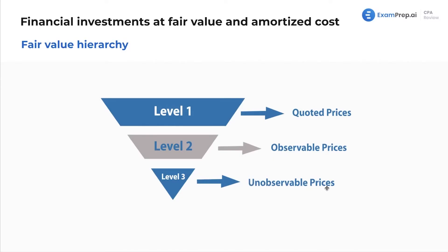Lastly, level three: unobservable prices. This would be something really specific that you just don't have anything you could observe. Maybe we discover a new type of renewable energy — awesome — but you can't compare it to anything else because it's completely new and revolutionary. That would be level three on the fair value hierarchy, and you'd probably need a specialized team to even attempt to give it a value. Those are our three levels of valuation.